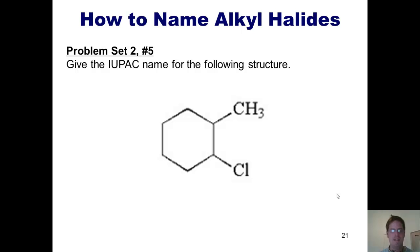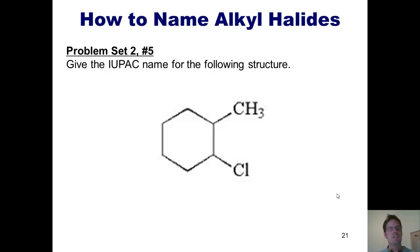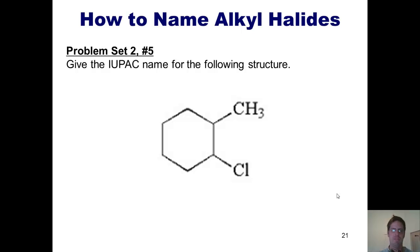This brings us to a problem that combines the naming of cycloalkanes with alkyl halides. Give the IUPAC name for the following structure. You'll note this is a cyclohexane — a ringed structure with six carbons — and it has two substituents: a CH3, which is a methyl group, and a chlorine, which as a substituent is called chloro. We could call it 1-chloro-2-methylcyclohexane or 1-methyl-2-chlorocyclohexane. Because chlorine comes before methyl alphabetically, the correct IUPAC name is 1-chloro-2-methylcyclohexane.